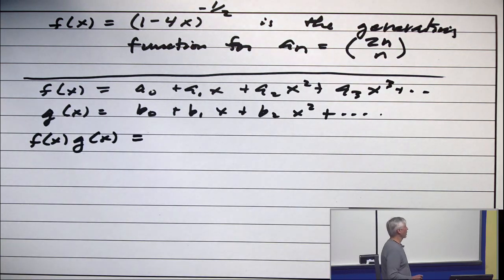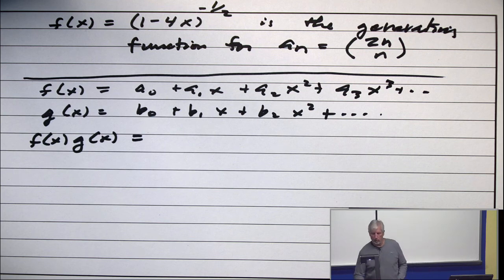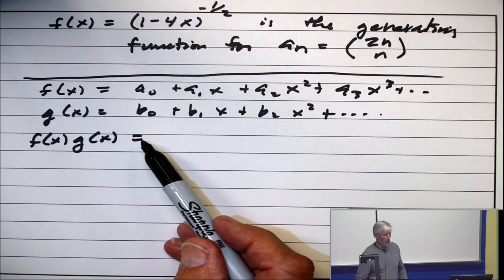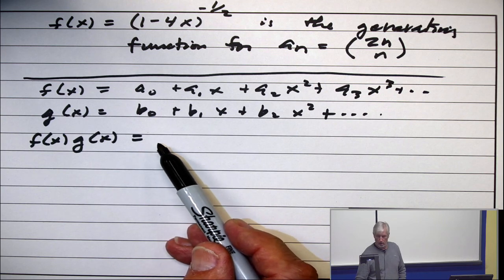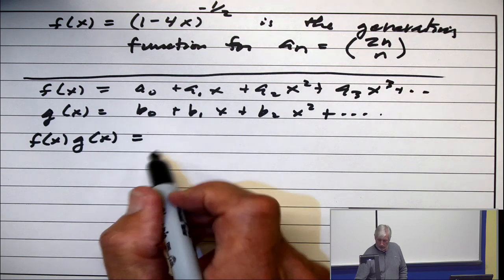Tell me what to write there. How do you multiply series together? What's the constant term? A0, b0.